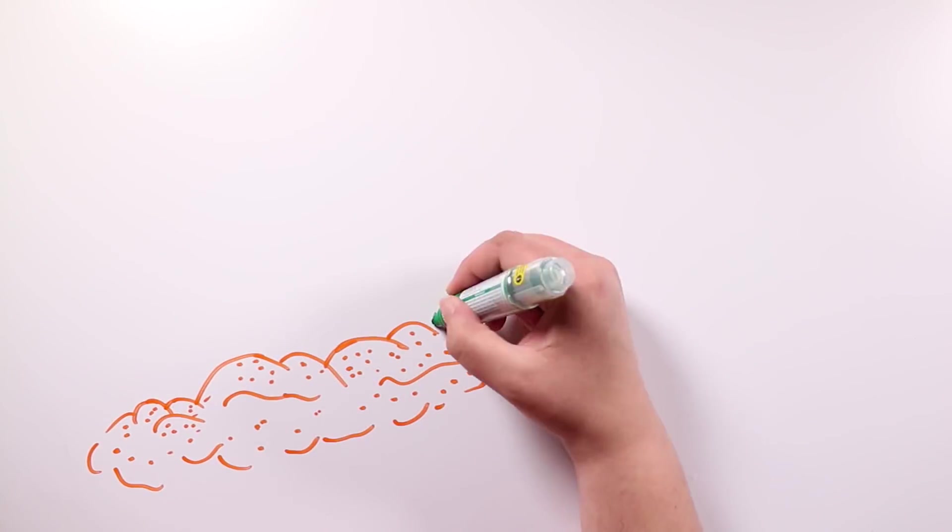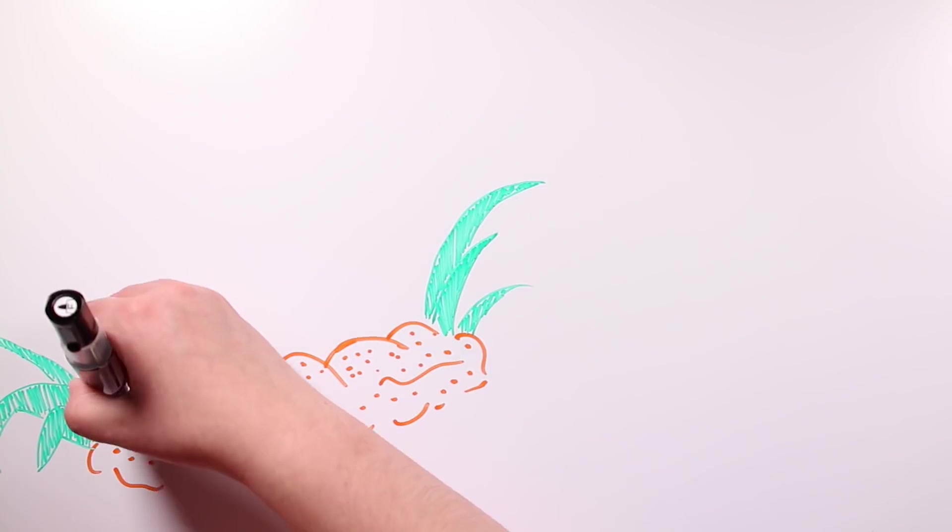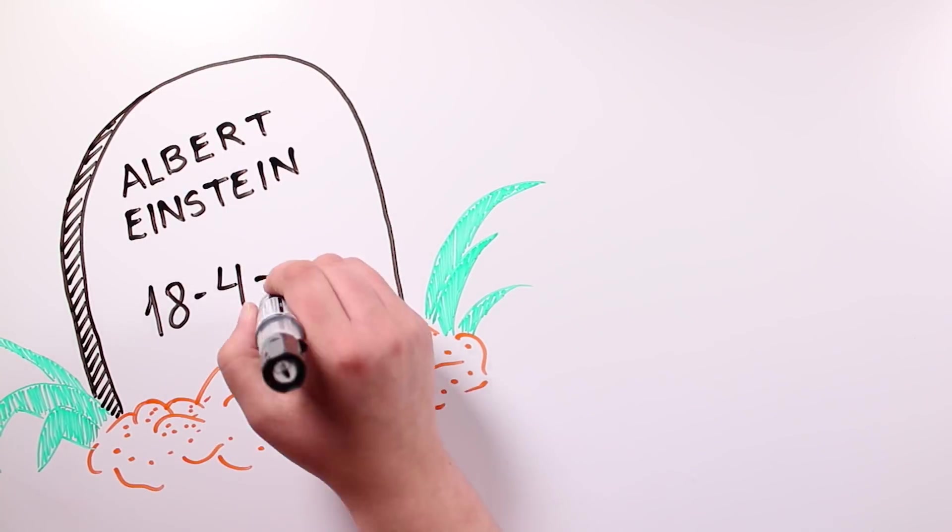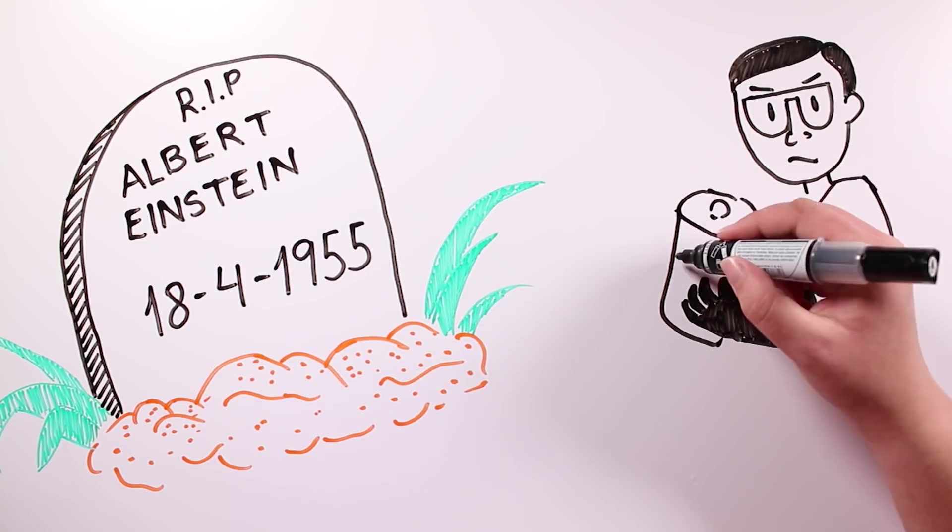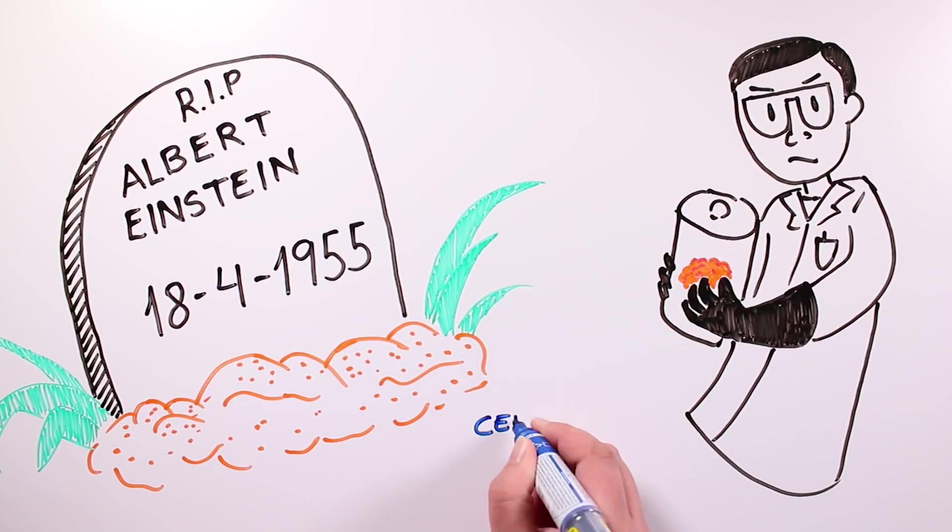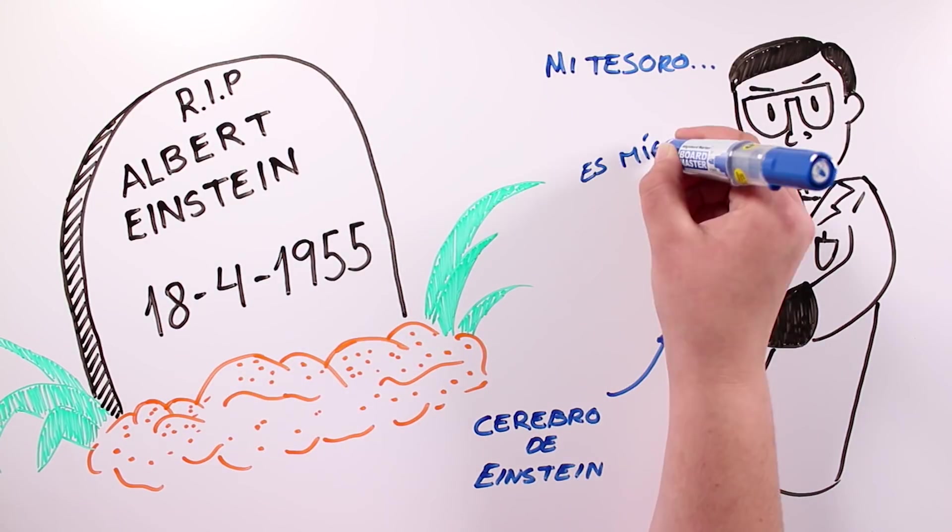On April 18th, 1955, Albert Einstein died in Princeton. During the autopsy, the forensic pathologist Thomas Harvey extracted his brain in secret and kept it hidden for 20 years, for possible future studies.